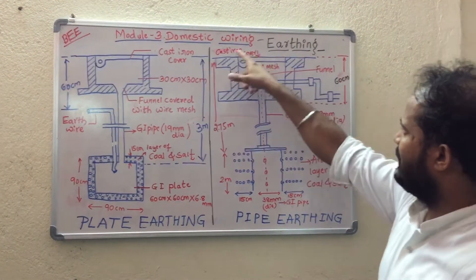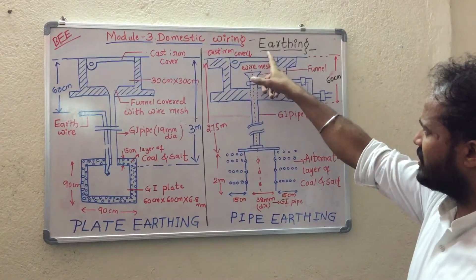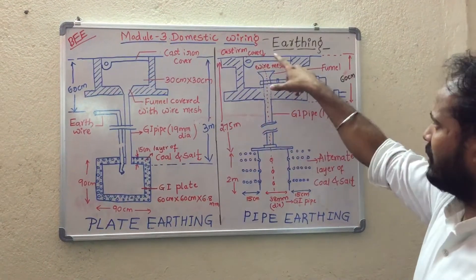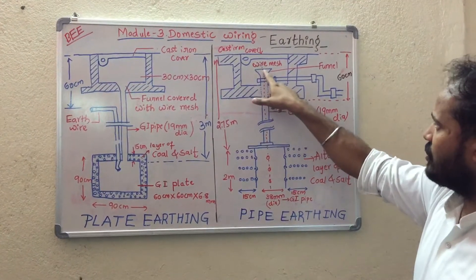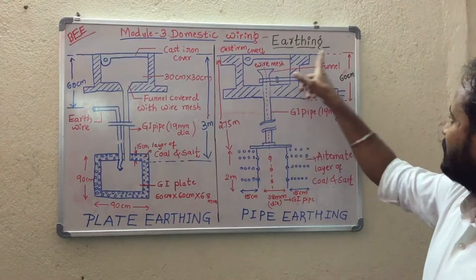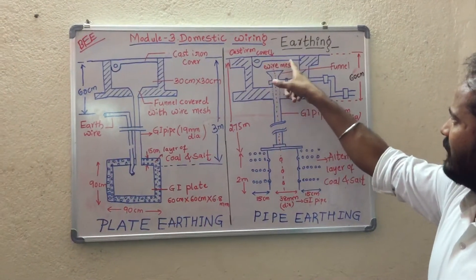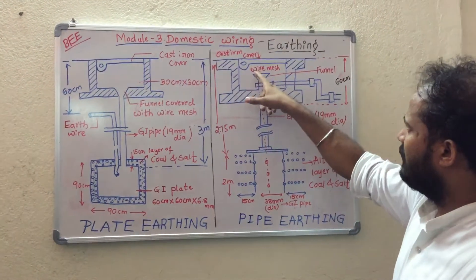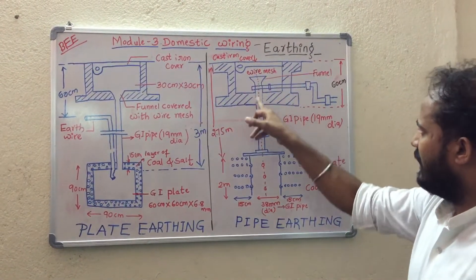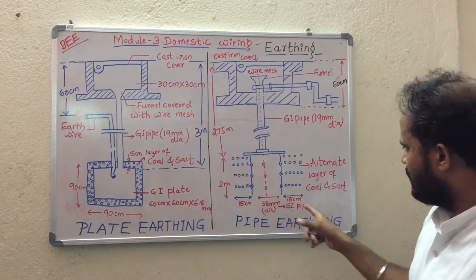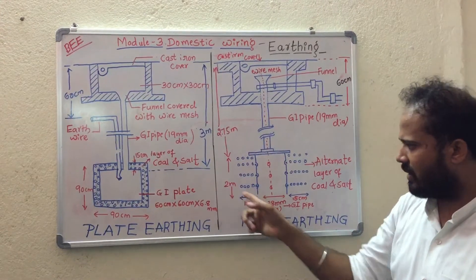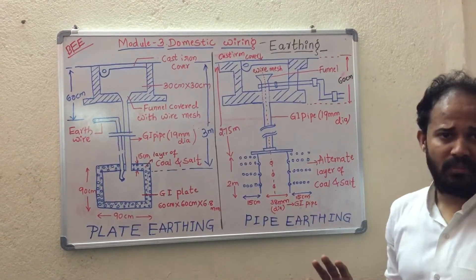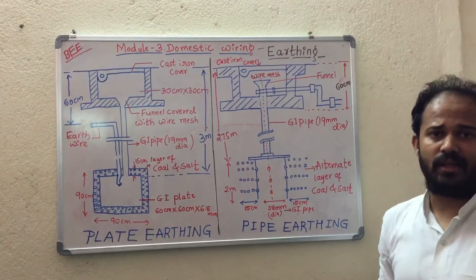Here you can see at the top there is a cast iron cover for opening and closing, then followed by a concrete structure, then a GI pipe of 19 mm diameter with a funnel connected at the top. In this connection, the wire mesh is taken and this pipe is connected to the GI pipe as earth electrode, whose dimension is 2 meter length and 38 mm diameter. That is why it is called pipe earthing.